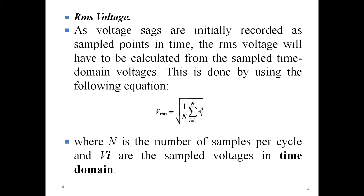These monitors record voltage in different timings through sampling — not continuously. For one cycle, 256 sample voltage values are collected or monitored, whereas for half a cycle, 128 samples are recorded. So N is the total number of samples per cycle, and V_i is the sampled voltage in time domain. The difference here is that instead of integrating over a duration T_s, we calculate over the total number of samples, integrating over each sample, because we are interested in calculating the voltage sag per duration.